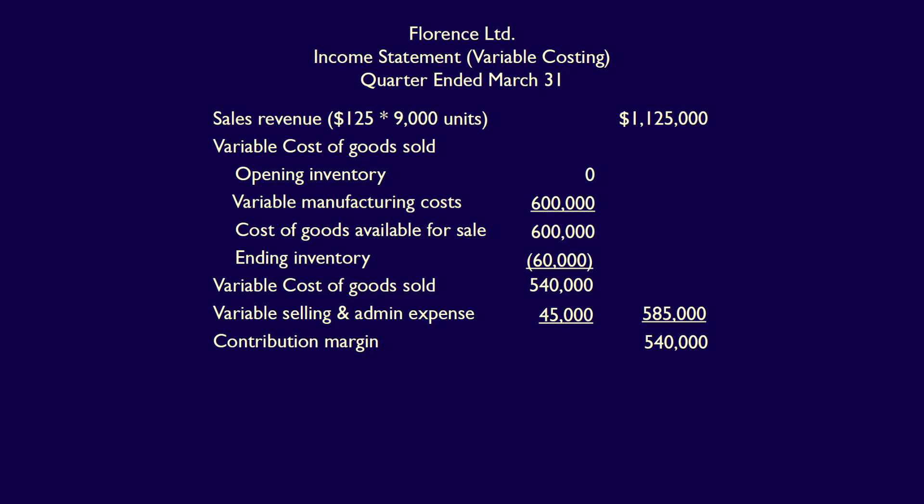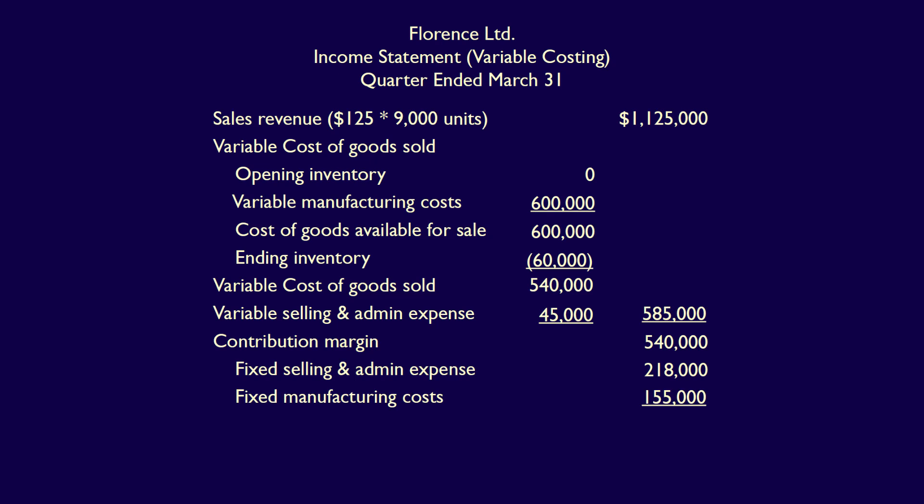The contribution margin is the amount of income that contributes to covering fixed costs and the required operating income. We now deduct all fixed costs, starting with fixed selling and admin expenses of $218,000. We then include 100% of the fixed manufacturing costs of $155,000 — remember, under variable costing, fixed manufacturing costs are expensed as period costs. Operating income equals the contribution margin minus all fixed costs: $540,000 minus $218,000 minus $155,000 equals operating income of $167,000.